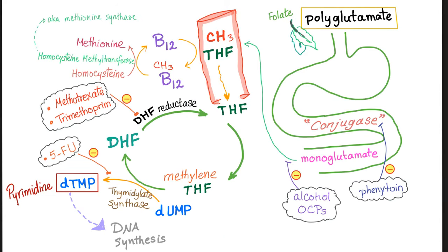Let's review folate. You eat your green leafy vegetables and then conjugase helps you absorb folate into the bloodstream. In the bloodstream, THF is bound to a methyl group — we want to kick that methyl group away, so THF leaves it and kicks it to B12.